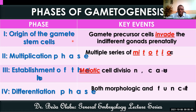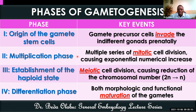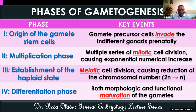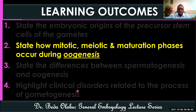The second phase involves numerical increase in the number of gametes, done by mitosis. The third phase is establishment of haploidy, done by meiotic division. The last phase is the differentiation phase, involving both morphological and functional maturation of the gametes. The way the sperm goes through phases two, three, and four is very different from the way the oocyte does, so now let's talk about oogenesis.